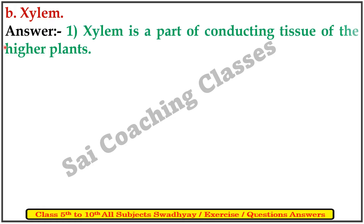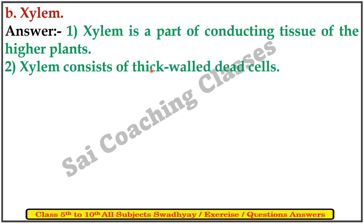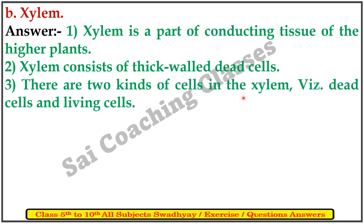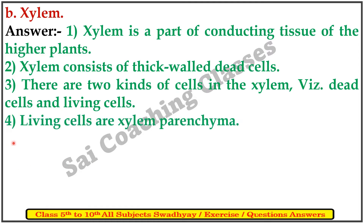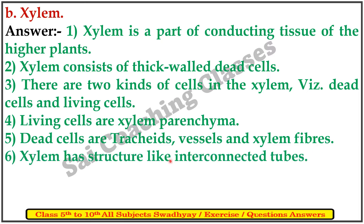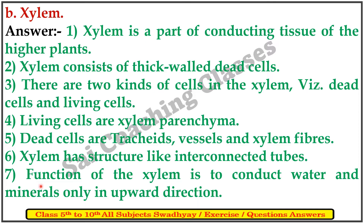B. Xylem. Answer: Xylem is a part of the conducting tissue of higher plants. Xylem consists of three to four types of cells. There are two kinds of cells in xylem: dead cells and living cells. Living cells are xylem parenchyma. Dead cells are tracheids, vessels, and xylem fibers. Xylem has a structure like interconnected tubes. The function of xylem is to conduct water and minerals only in an upward direction.